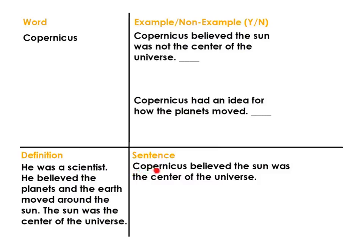Let's read a sentence together — I read, and then you read: Copernicus believed the sun was the center of the universe. Now example and non-example: Copernicus believed the sun was not the center of the universe. And: Copernicus had an idea for how the planets moved.